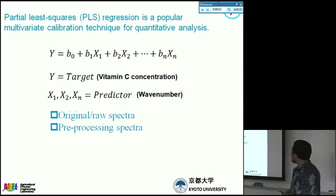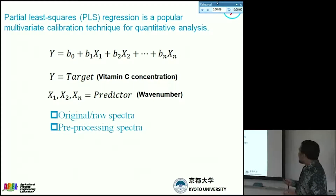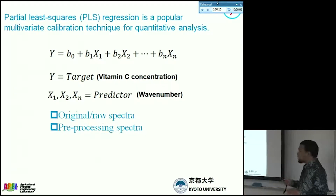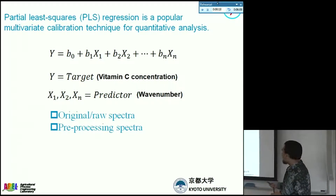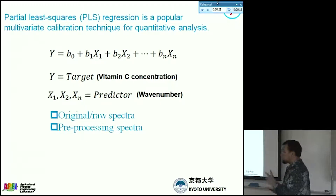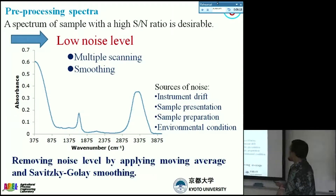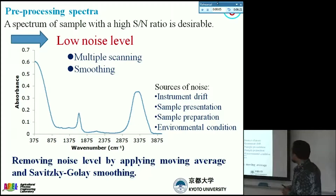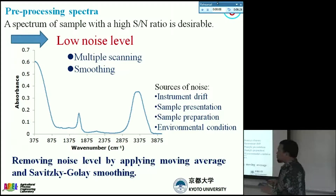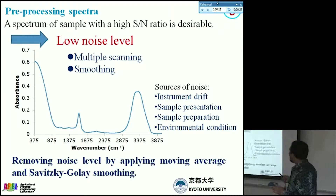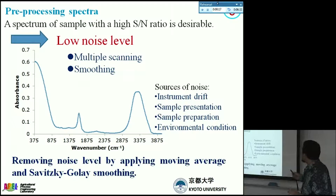By using partial least squares regression, we can construct the relation between one or more targets — here we have one target, vitamin C — and many predictors. In our study, for predictors we use first the original spectra, and compare with the pre-processed spectra. It is very important that we keep the noise level at a minimum value to get as high a signal-to-noise ratio as possible for any kind of spectrometer.